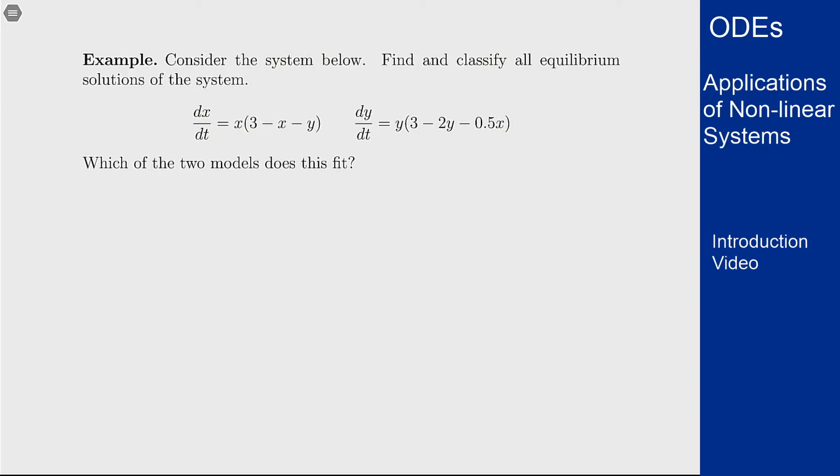Let's look at this equation here. It's written in a different form but we'll see it ends up fitting the same model that we had before. What's this going to look like? Well, I can see if I write this out, this will be x times (3 minus x minus y) and y times (3 minus 2y minus 0.5x). So that shows this is a competing species model.